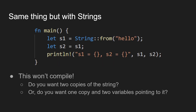Now let's look at the same thing with strings. If we have let S1 equal, and it's a string, hello. And then we say let S2 equal to S1 — just like we said let B be equal to A — and then we print them out. What will happen? Well, in fact, in Rust, that program won't compile.